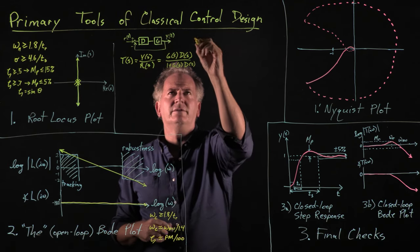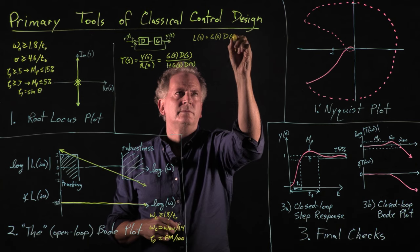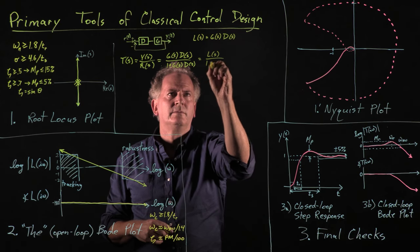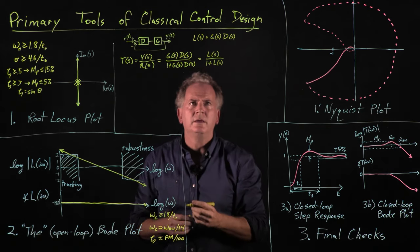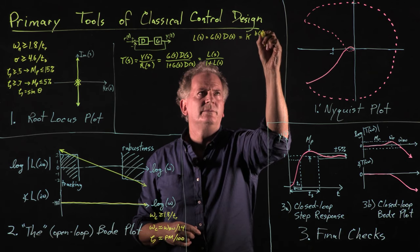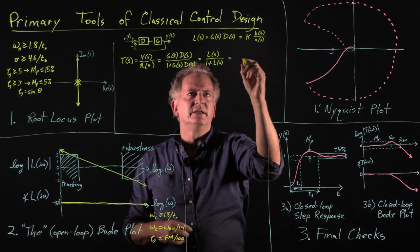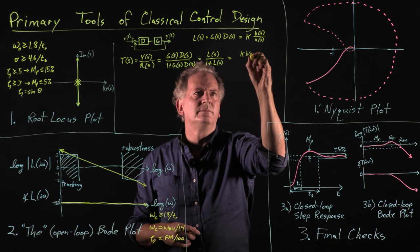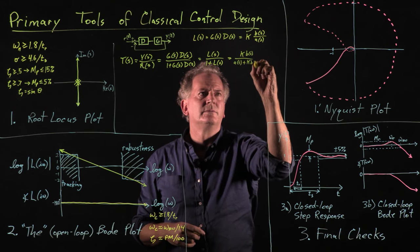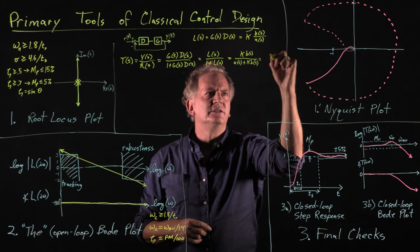To simplify the discussion, we often identify L(s) as g(s)d(s), and so we can write this as L(s) over 1 plus L(s). Further, if L(s) is k times b(s) over a(s), then after clearing the compound fraction, we can write this simply as k times b(s) over a(s) plus k times b(s), or alternatively, dividing numerator and denominator by k as b(s).